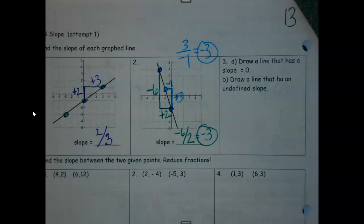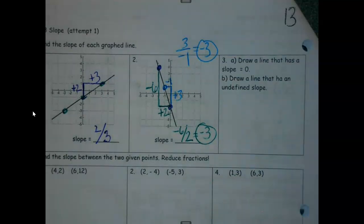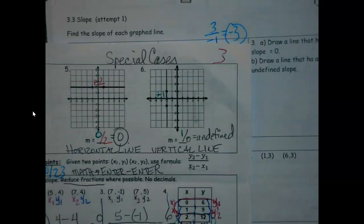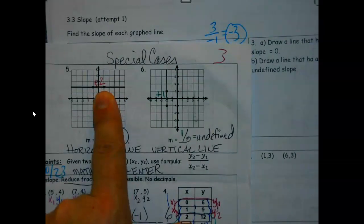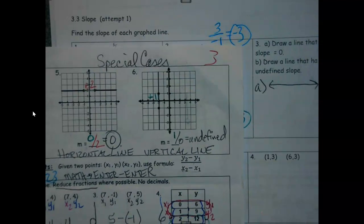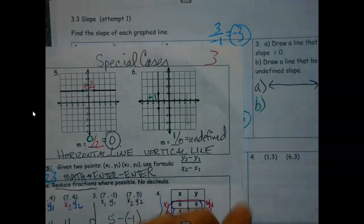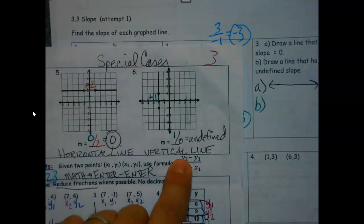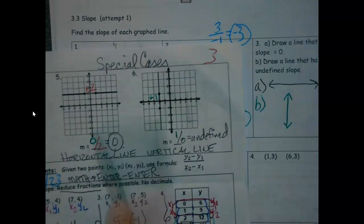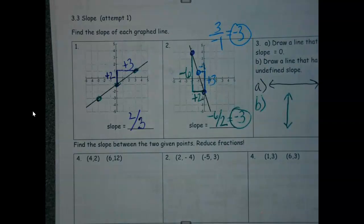The next piece: I've got to find my special cases — there are my notes. 'Draw a line that has a slope of zero.' I look through my notes — zero just means it's a horizontal line. So literally all you have to do for part (a) is draw a horizontal line — you're good. 'Draw a line that has an undefined slope' — vertical line. Put it in. That's it. It's right here in the notes if you need it.